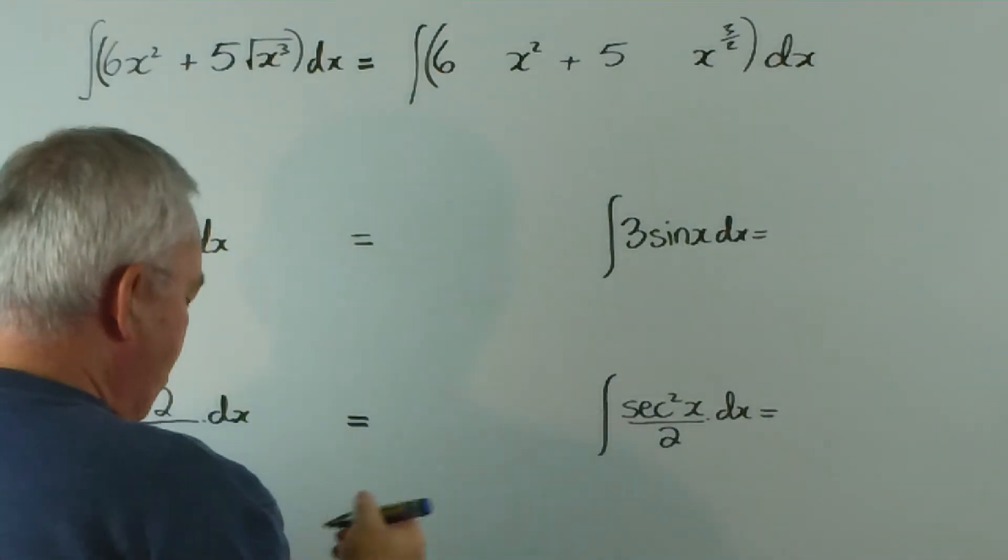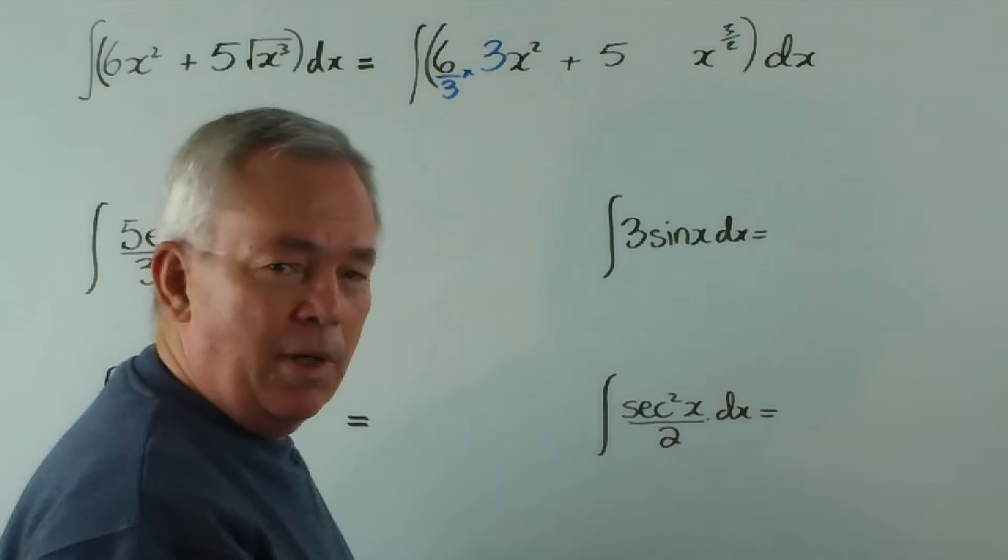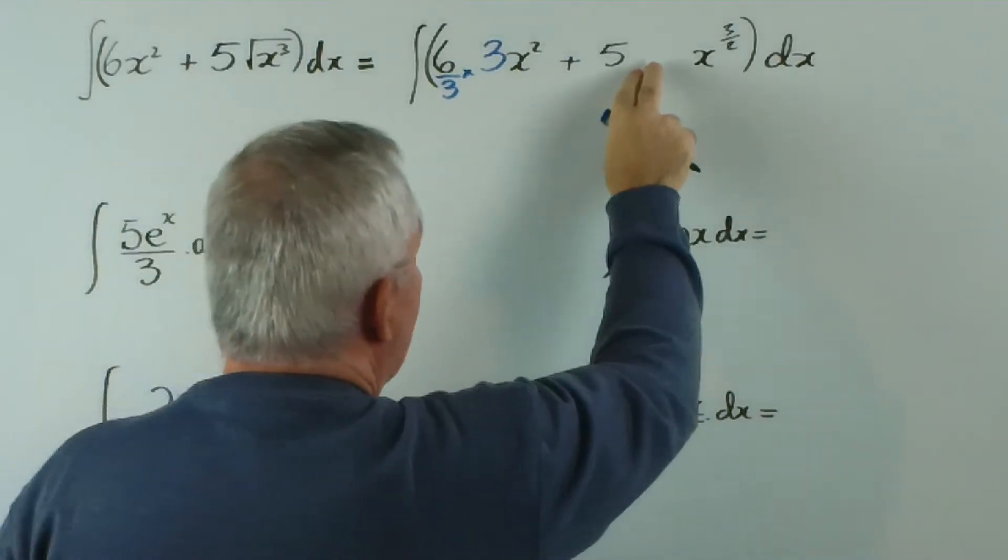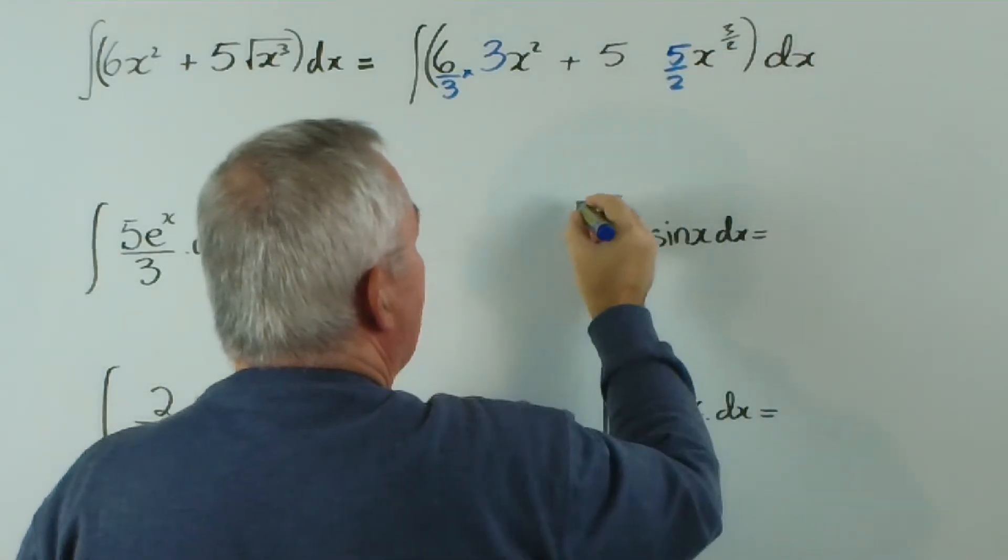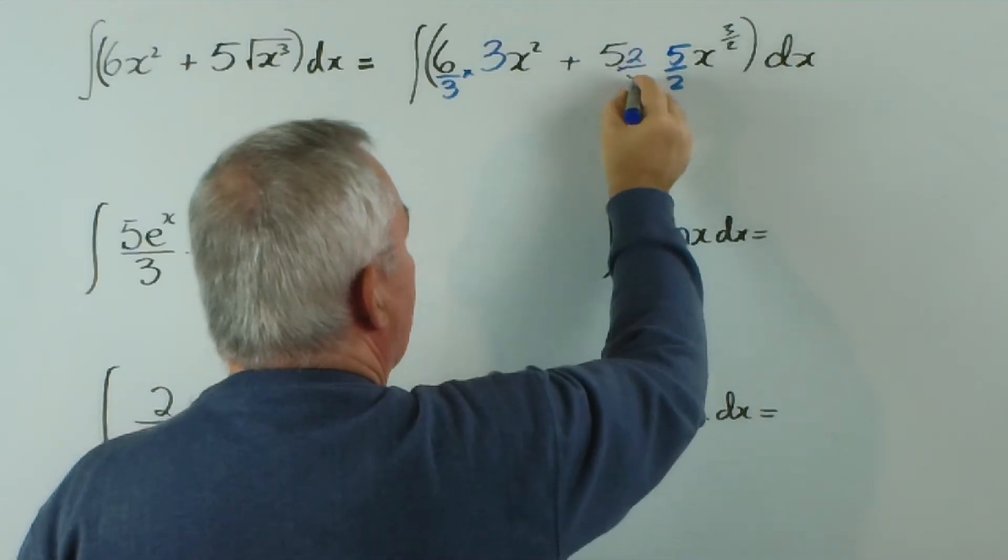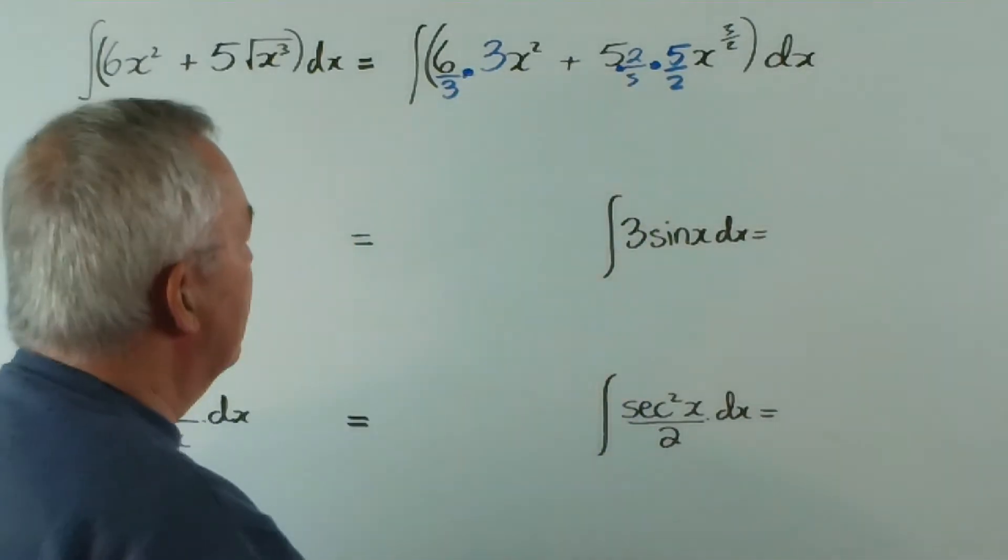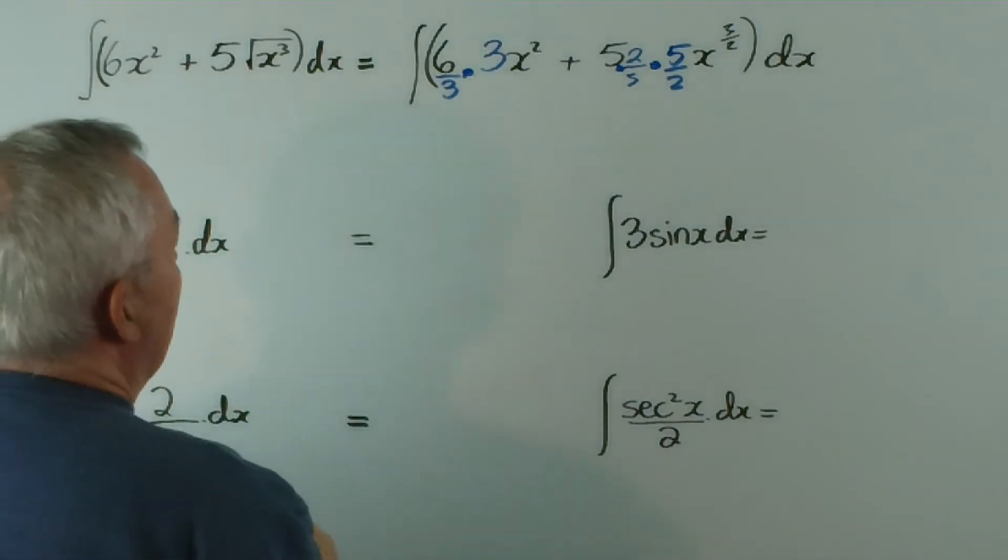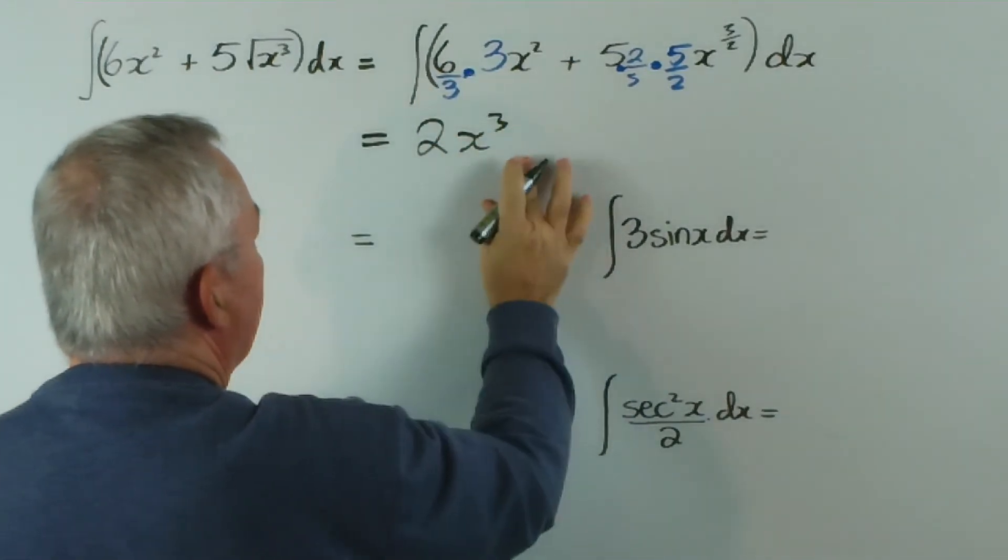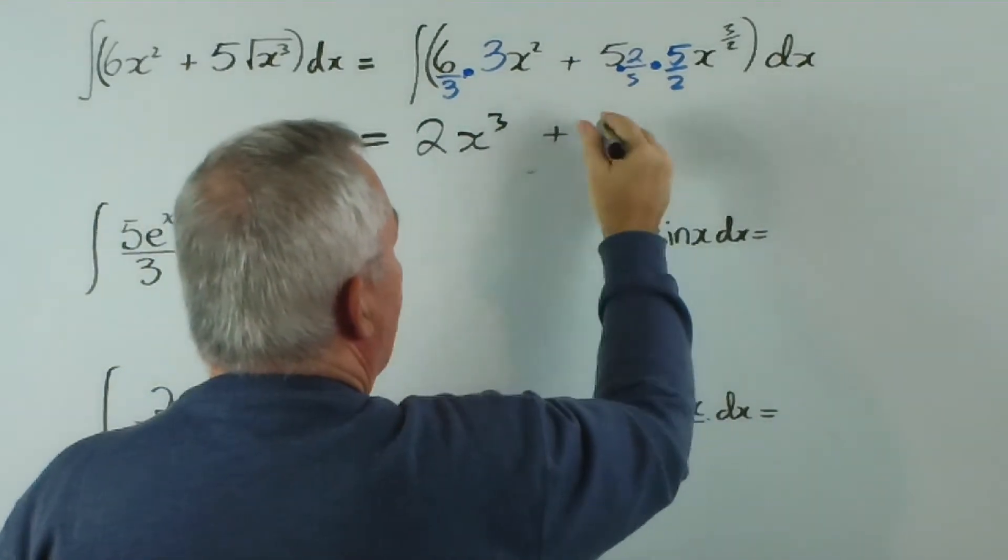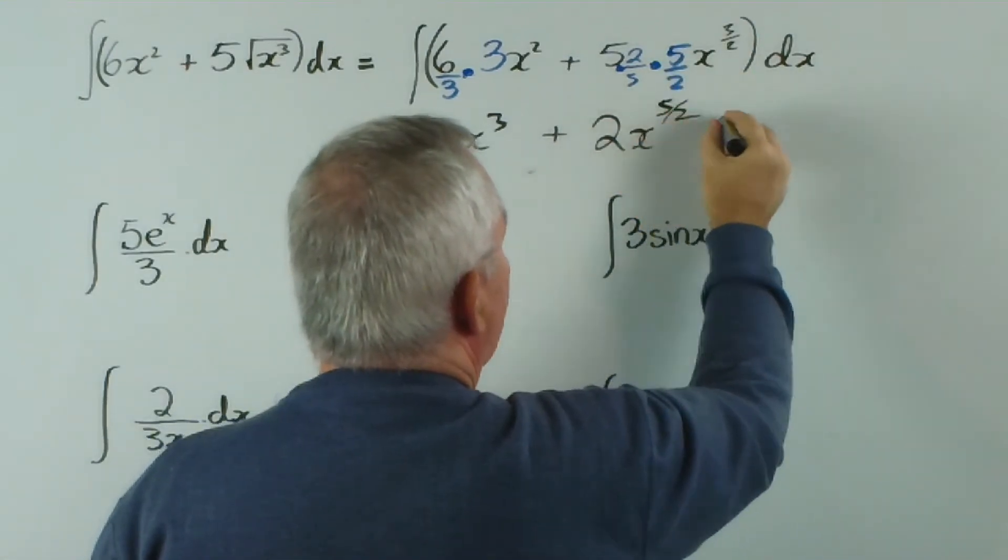Now, the pattern we need to integrate is 3x squared, so we compensate by dividing the coefficient by three as well, and over here, one more than this would be five on two, and we would compensate by multiplying this by two on five. I'm using multiplication signs; strictly speaking, I should be using dots. And all that means is this: three into six is two, the integral of 3x squared is x cubed, plus, the fives divide out and leave two, and the integral of this is x to the five on two, plus c. That's it.